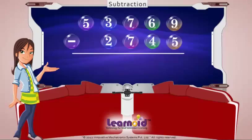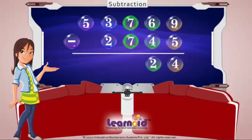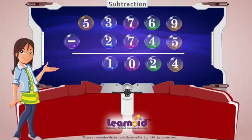And now subtract. 9-5 is 4. 6-4 is 2. 7-7 is 0. 3-2 is 1. 5-0 is 5. The answer is 51,024.